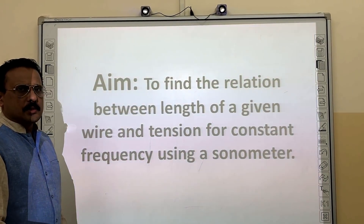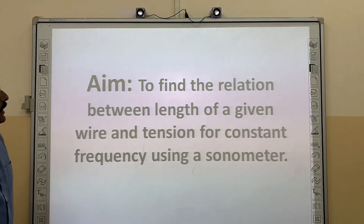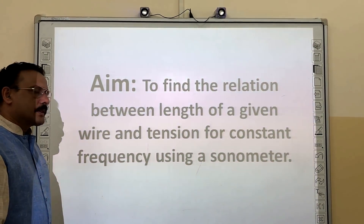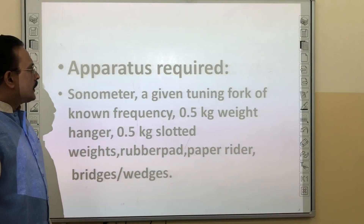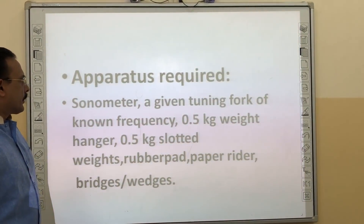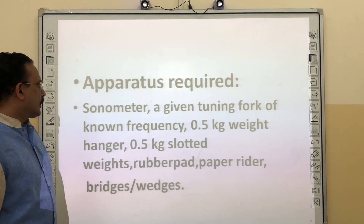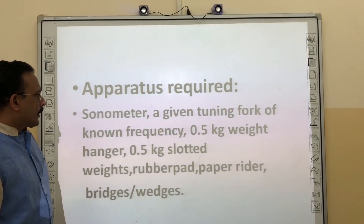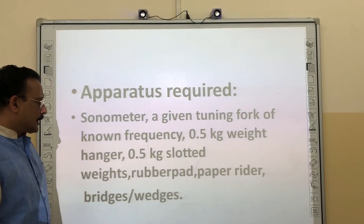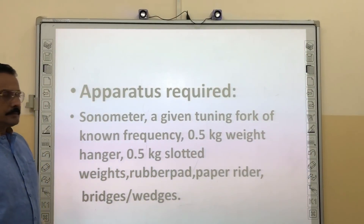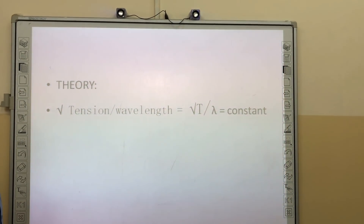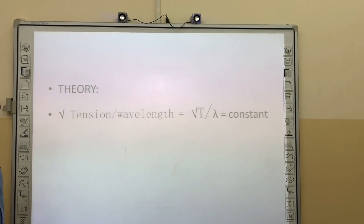Today we will do another experiment related to the sonometer, where we will try to find the relationship between the length of a given wire and the tension for a constant frequency. The apparatus required: sonometer, a tuning fork of known frequency, 0.5 kg slotted weights, rubber pad, paper rider, and bridges or wedges. The ratio of tension produced along the string to the square of the wavelength will be a constant.